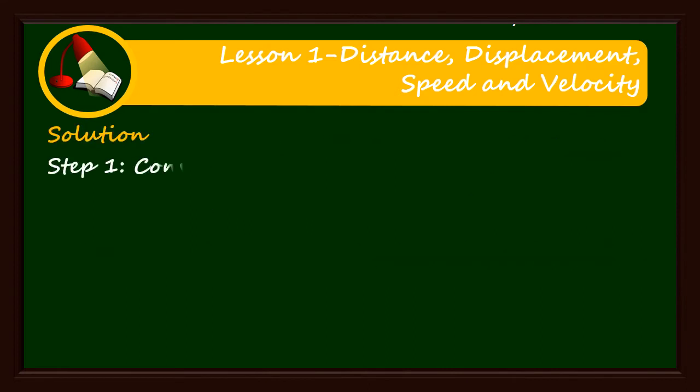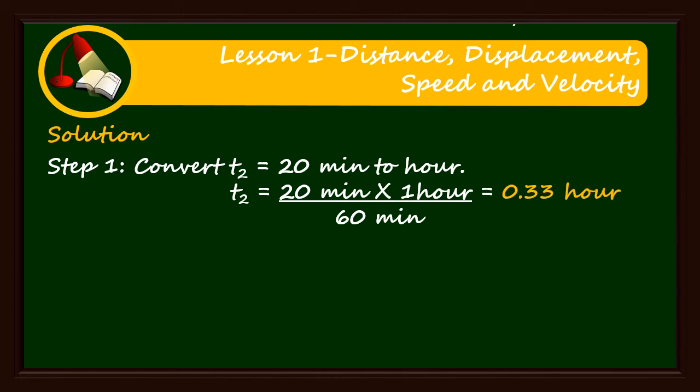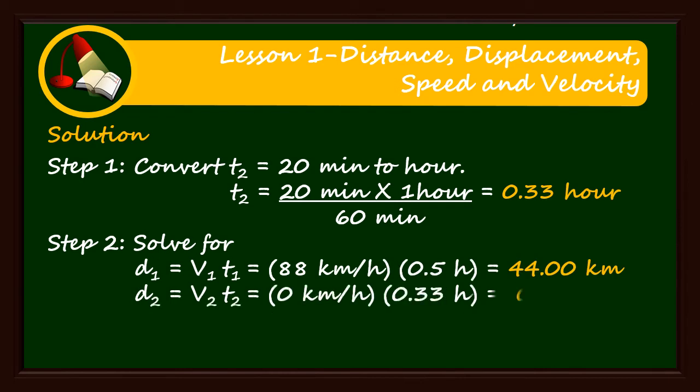Step 1: Convert T sub 2, equals 20 minutes to its corresponding magnitude in hour. Step 2: Solve for D sub 1, D sub 2, and D sub 3 by multiplying the given velocity to its corresponding time.